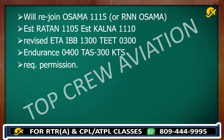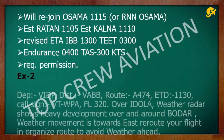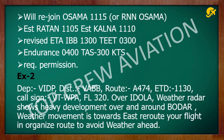Now let's discuss one example as per the chart. Departure is VIDP, destination is VABB Mumbai — you are flying from Delhi to Mumbai. Route is Alpha 474, ETD is 1130. Call sign is Victor Tango Whiskey Papa Alpha, flight level 320. Over Eidola, weather radar shows heavy development over and around the border, and weather movement is towards east. Reroute your flight on an organized route to avoid weather ahead.